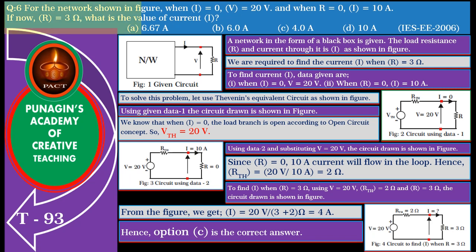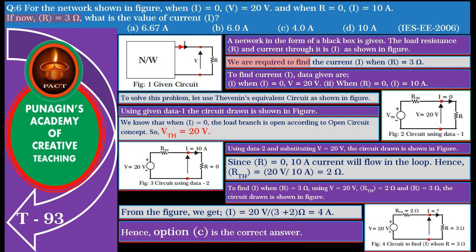Friends, this problem is easy. A network in the form of a black box is given. The load resistance R and the current through it I is shown in the figure. We are required to find the current I when R equals 3 ohm. The data given is: when I equals 0, the terminal voltage phi equals 20 volts; and when R equals 0, I equals 10 amperes. To solve this problem, let us use Thevenin's equivalent circuit as shown in the figure.